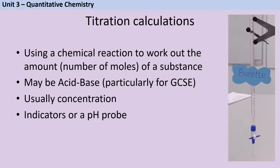The purpose of the titration is to work out the concentration of the unknown solution in the conical flask. We can either use a chemical indicator or a pH probe in order to determine when the reaction is complete and the solutions have been neutralized. This point where we see the first permanent colour change is called the end point.